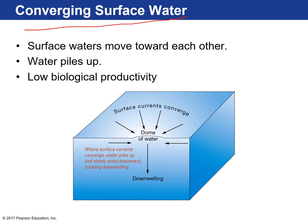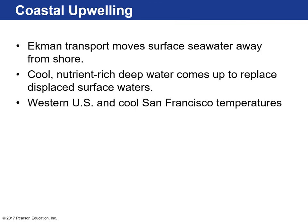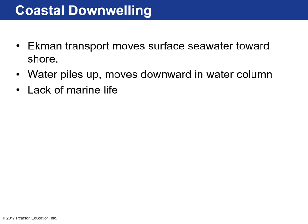When surface waters converge, water piles up and forms a dome. Because of that weight and gravity, water is pulled downward — that's downwelling, typically resulting in low biological activity. This can also happen on coastlines, which is why certain coastlines are rich fishing areas. Coastal winds or prevailing winds push water in a certain direction, forcing deep nutrient-rich water to the surface via Ekman transport. That happens along the western United States — San Francisco is an example — called coastal upwelling.